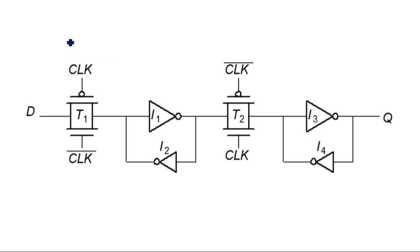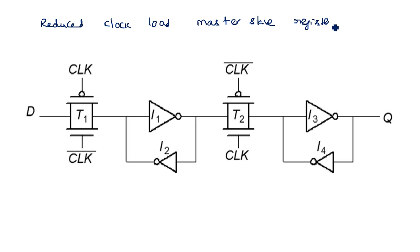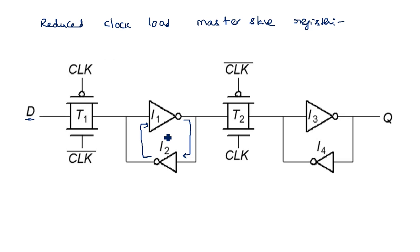Now let us look at the reduced clock load master-slave register. The input data is applied to the input of the transmission gate. Everything is constructed with NMOS and PMOS transistors, but here we have used a transmission gate which has better control and logic level swing over normal NMOS and PMOS. Every logic circuit is implemented in terms of transmission gates. Here we have a transmission gate followed by a CMOS inverter connected back-to-back.